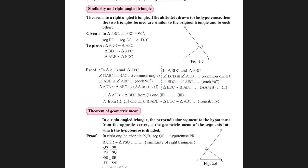Given triangle ABC with angle ABC equal to 90 degrees and segment BD perpendicular to AC. To prove: triangle ADB is similar to triangle ABC; triangle BDC is similar to triangle ABC; and triangle ADB is similar to triangle BDC.